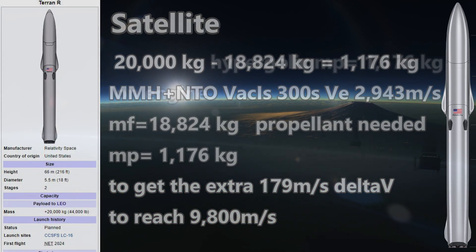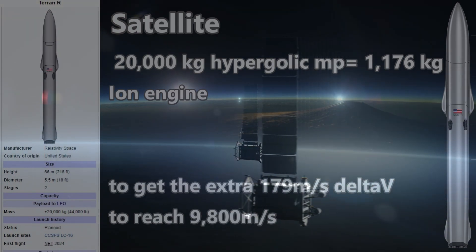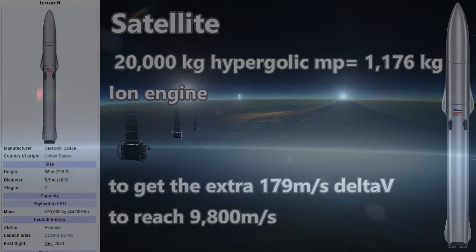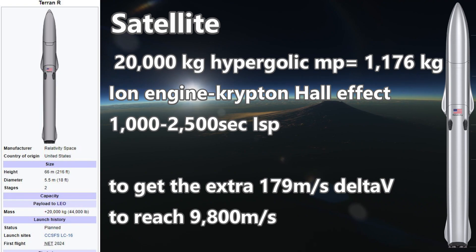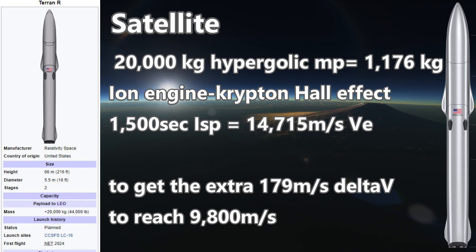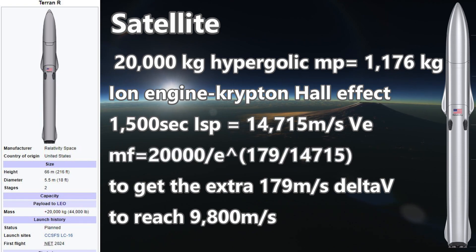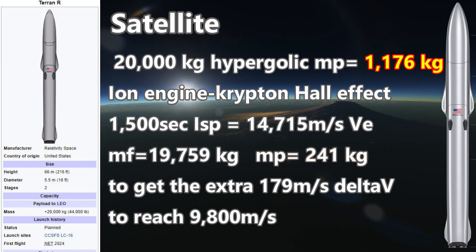We might instead decide to use an ion engine, like the ones that use Krypton propellant on the SpaceX Starlink satellites. Krypton is not as good as xenon for ion engines, but if it can get the job done, it's a lot cheaper. SpaceX uses Hall effect thrusters, and with Krypton these should have a specific impulse between 1,000 to 2,500 seconds. Let's go with 1,500 seconds for this example. A specific impulse of 1,500 seconds gives an exhaust velocity of 14,715 meters per second, and calculating final mass gives us 19,759 kilograms. That means if we use Krypton Hall thrusters instead of Draco hypergolic thrusters, we would need only 241 kilograms of propellant instead of the 1,176 kilograms we needed before.